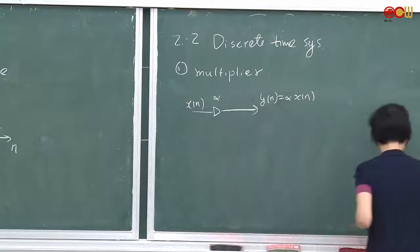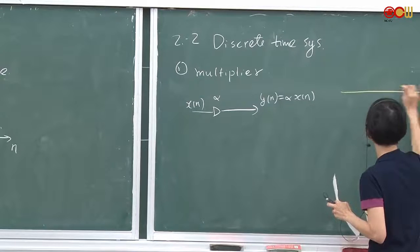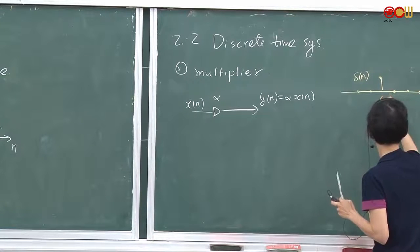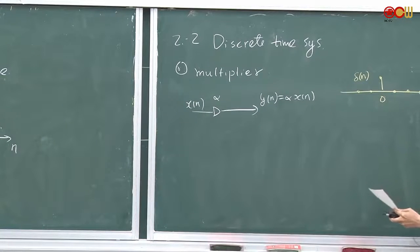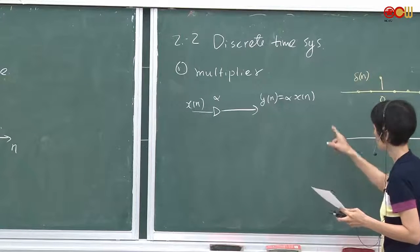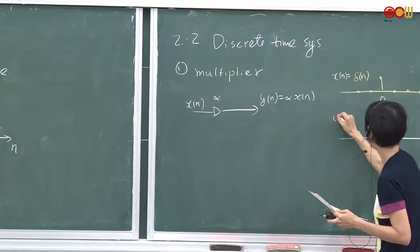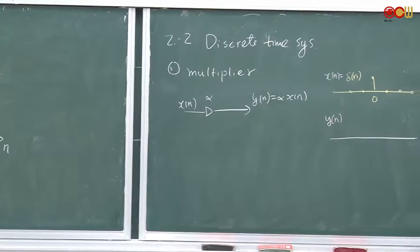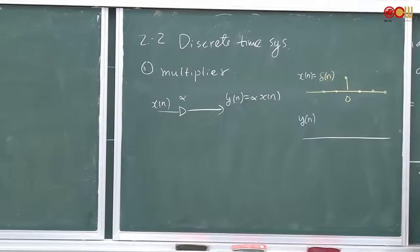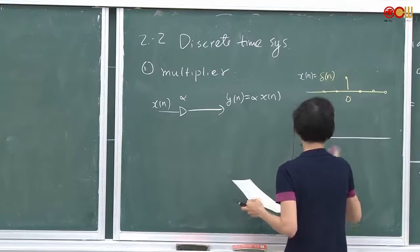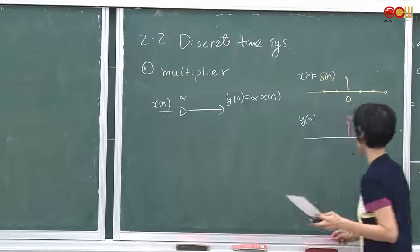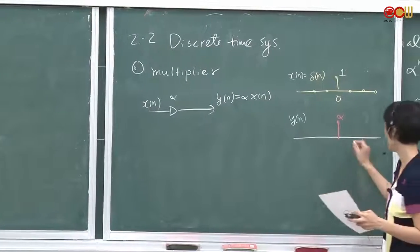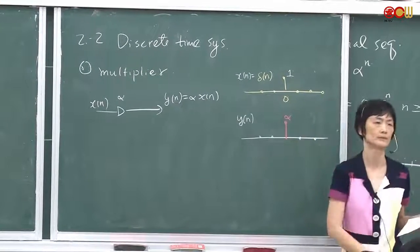For example, our signal is the impulse function as the input. What would be the output of the multiplier? It's still an impulse, but it's not a unit impulse anymore. It's still an impulse, and the value here is going to be alpha. This is a unit impulse, so it's 1 here, and this is now scaled by alpha, and all the other samples are still zero. That's a multiplier.